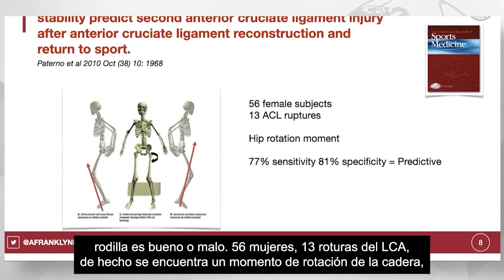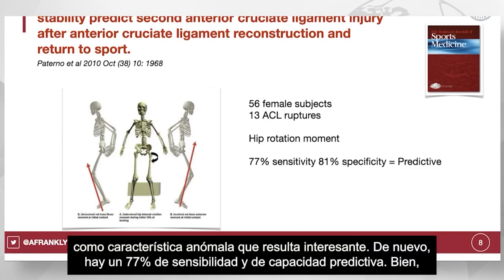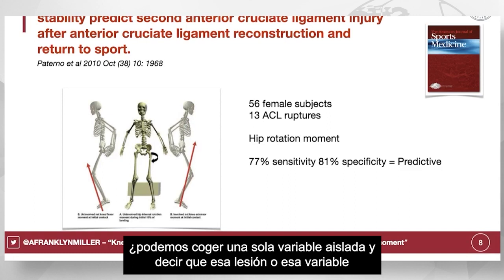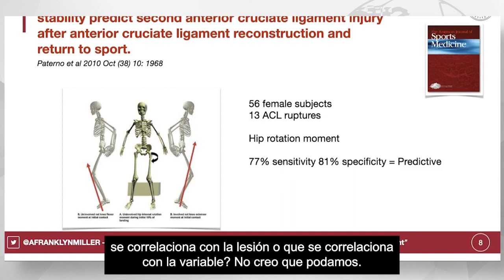Looking at another study again trying to understand whether knee valgus is good or bad: 56 female subjects, 13 ACL ruptures — it actually identified hip rotation moment as the abnormal feature of interest, again with 77% sensitivity and predictive ability. So can we take a single variable on its own and say that variable correlates with injury? I don't think we can.